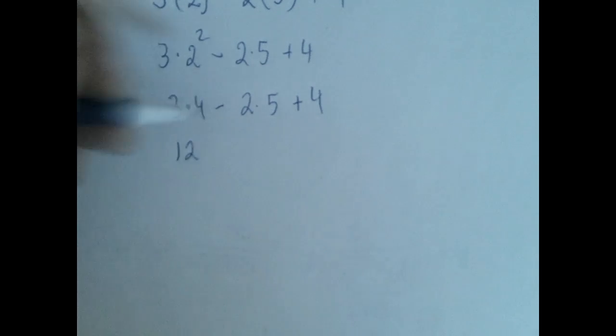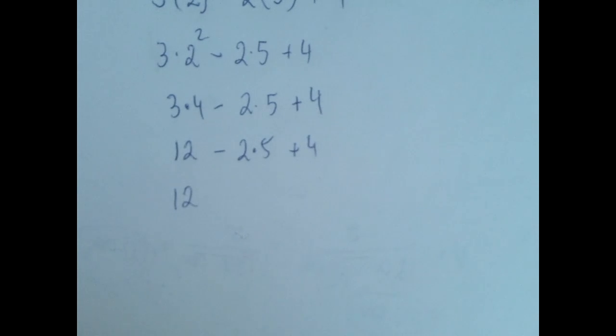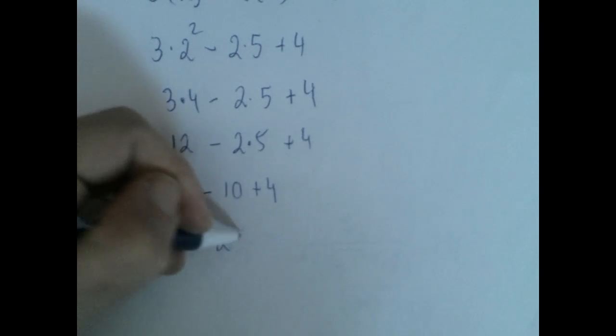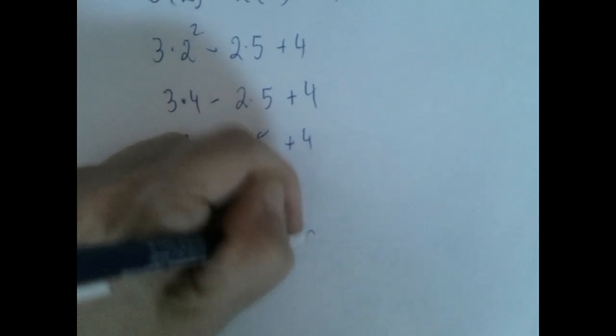3 times 4 is 12. Now the next multiplication, 2 times 5 is 10. And now additions and subtractions left to right. 12 minus 10 is 2. And 2 plus 4 is 6.